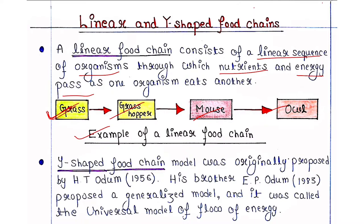The Y-shaped food chain model was originally proposed by H.T. Odum in 1956. His brother E.P. Odum in 1983 proposed a generalized model called the universal model of flow of energy.